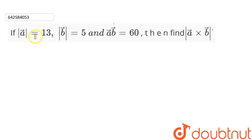In this question we have been given that mod A vector is equal to 13 and mod B vector is equal to 5 and A vector dot B vector is 60 and we have to find magnitude of A vector cross B vector.